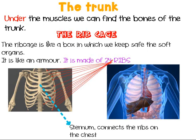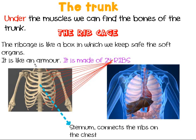Under the muscles we can also find the bones of the rib cage. The rib cage is like a box in which we keep safe the soft organs like the heart, the liver, and the lungs. The rib cage looks like an armor and it's made of 24 ribs — 12 on each side. The big hard bone in the middle of your chest, touch it — you can feel it — connects all the ribs and is called the sternum.